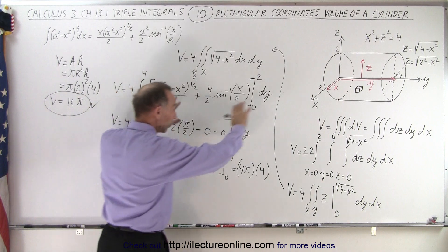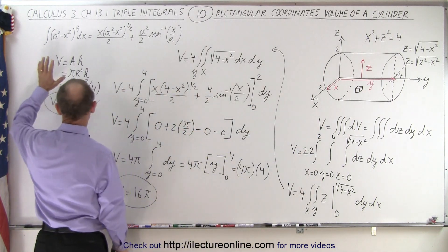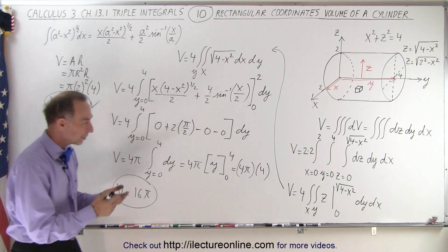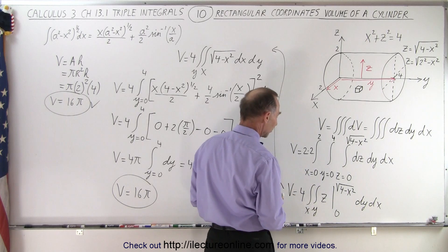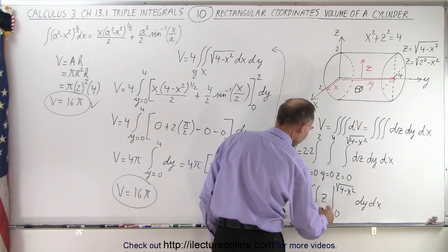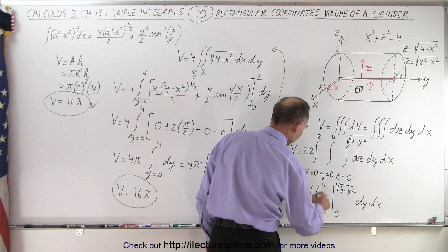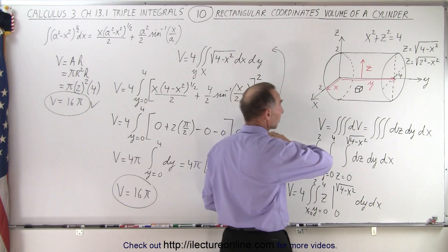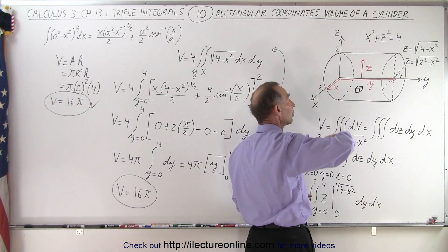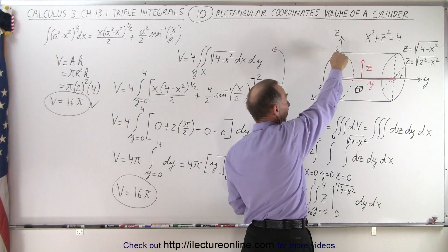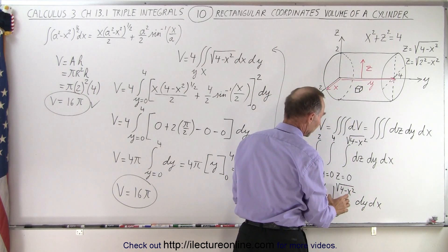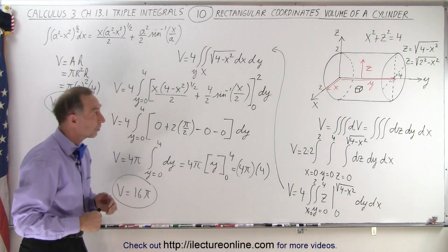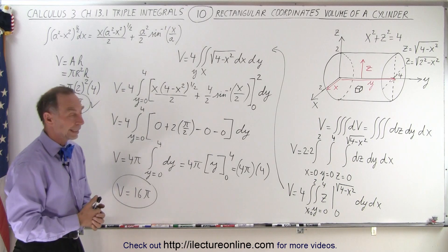You might ask why we went through all this trouble when we can simply use the cylinder volume formula. But it's about learning the technique — how to determine the limits of integration. In this case y goes from 0 to 4, x from 0 to 2, but the z limits are bounded by the cylinder surface. Going up from the xy-plane, you hit the cylinder at z equals the square root of 4 minus x², depending on x. That is how we find the limits and how we do triple integration.